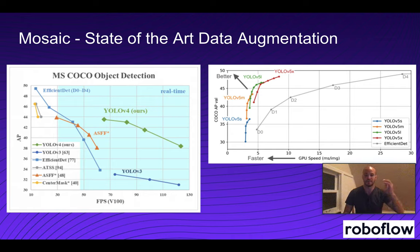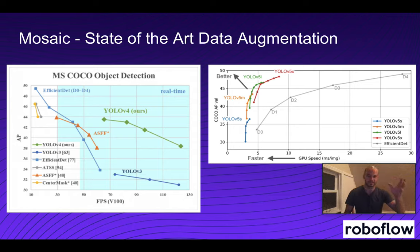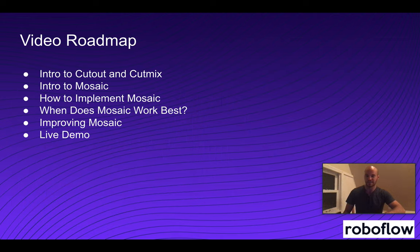Mosaic data augmentation is one of those cutting-edge augmentations really pushing the state-of-the-art of these models. It's very important to know that the mosaic augmentation is applied on the COCO dataset, which is a general dataset, so it's important to understand the augmentation for yourself before you jump into your own object detection modeling task.